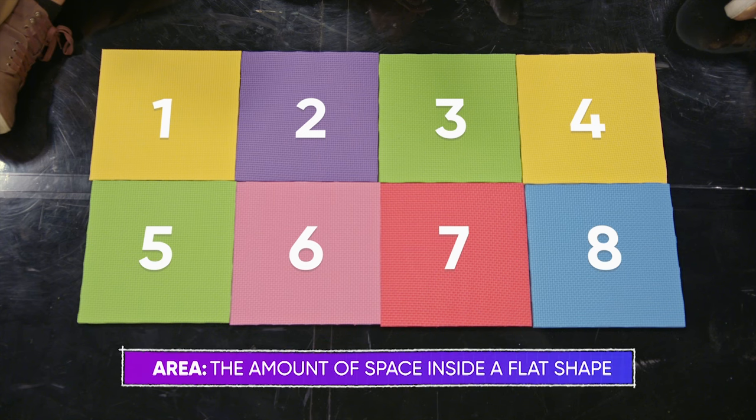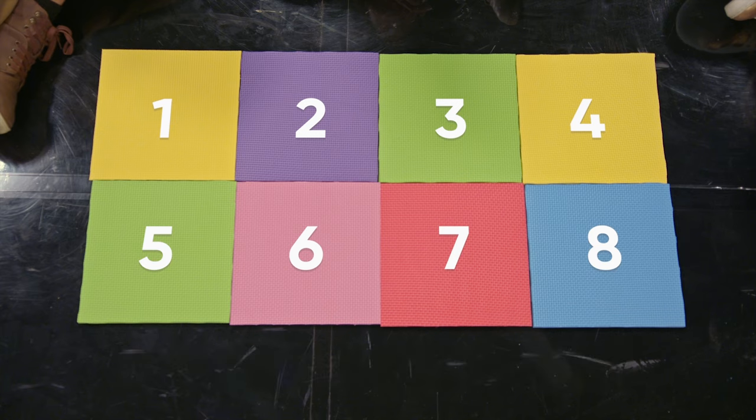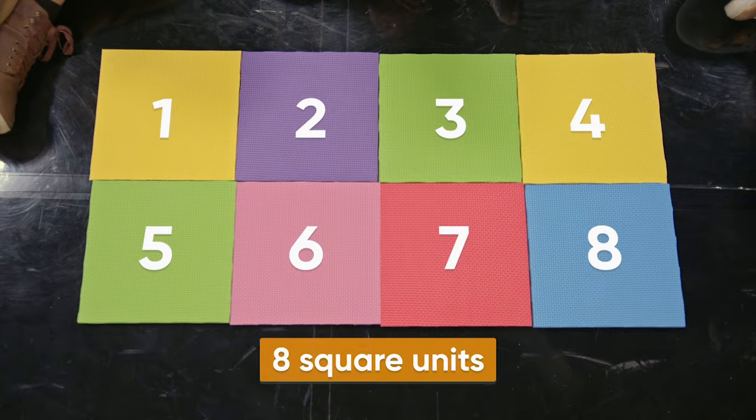Since this rectangular mat is a flat shape, we can say that its area is eight squares. We call each square a square unit.